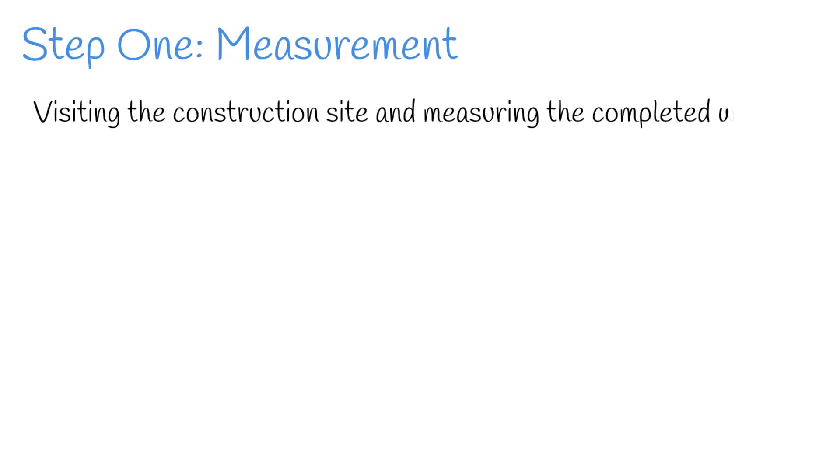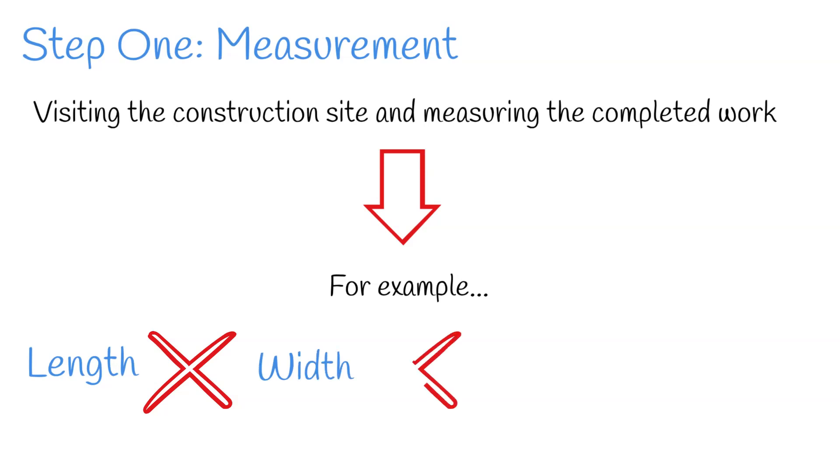The first step, measurement, involves visiting the construction site and measuring the completed work. The quantity surveyor will use various measurement techniques, for example, taking measurements of length, width, height and volume to determine the amount of work that has been done.